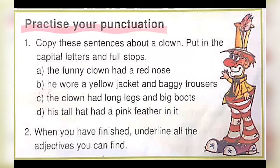Moving on to the next exercise: Practice Your Punctuation. Copy these sentences about a clown, put in the capital letters, and add full stops. A: 'The funny clown had a red nose.' We make the first letter 'A' capital — 'The funny clown had a red nose.' Then put a full stop.